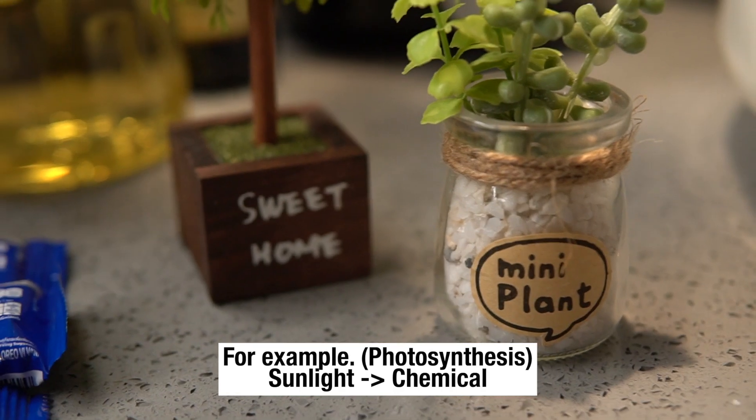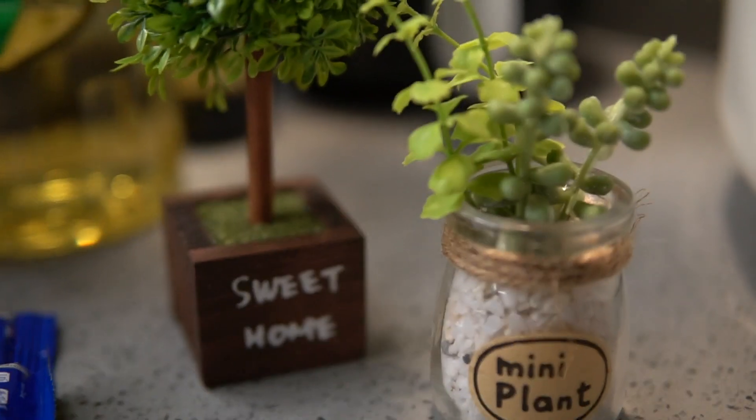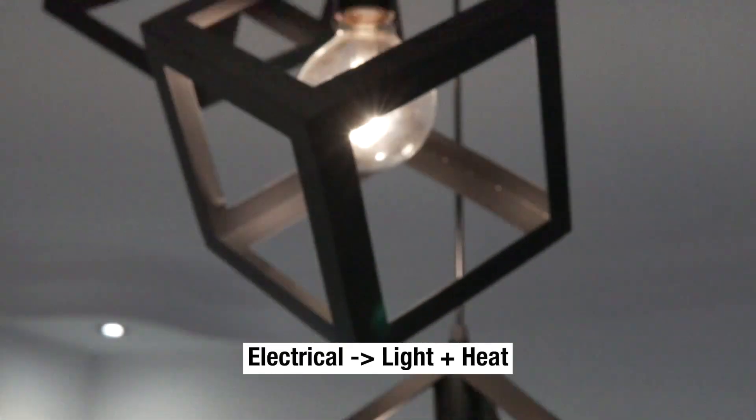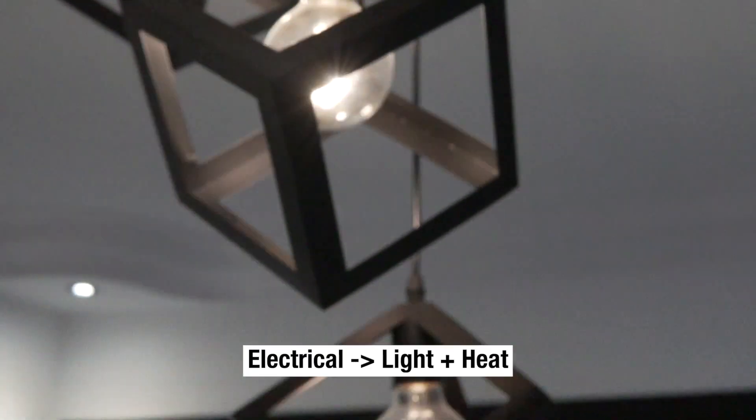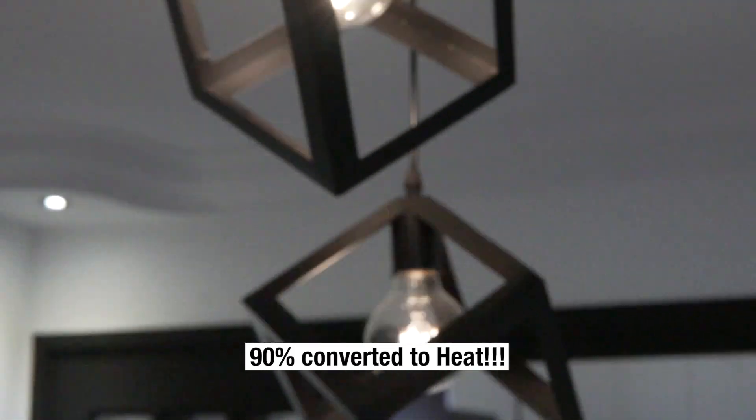For example, plants use energy from sunlight during photosynthesis. Only 10% of energy in a light bulb is used to create light. 90% of a light bulb's energy creates heat.